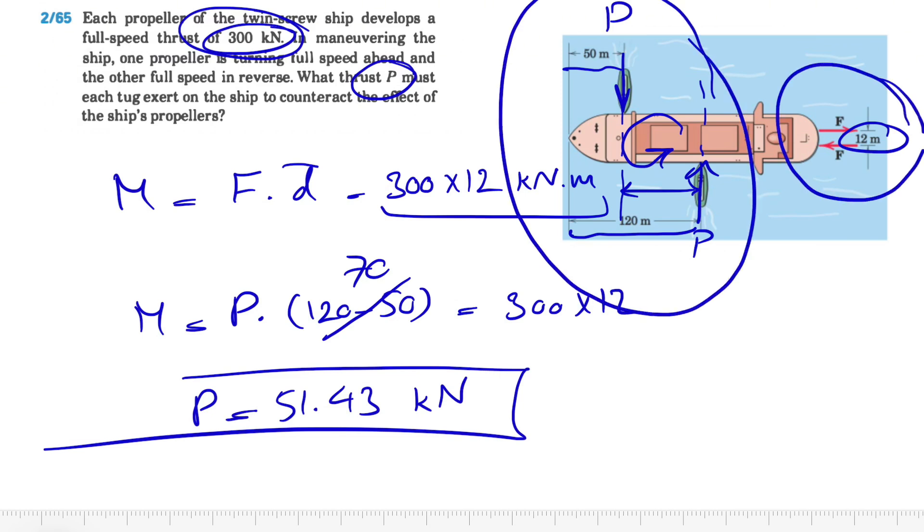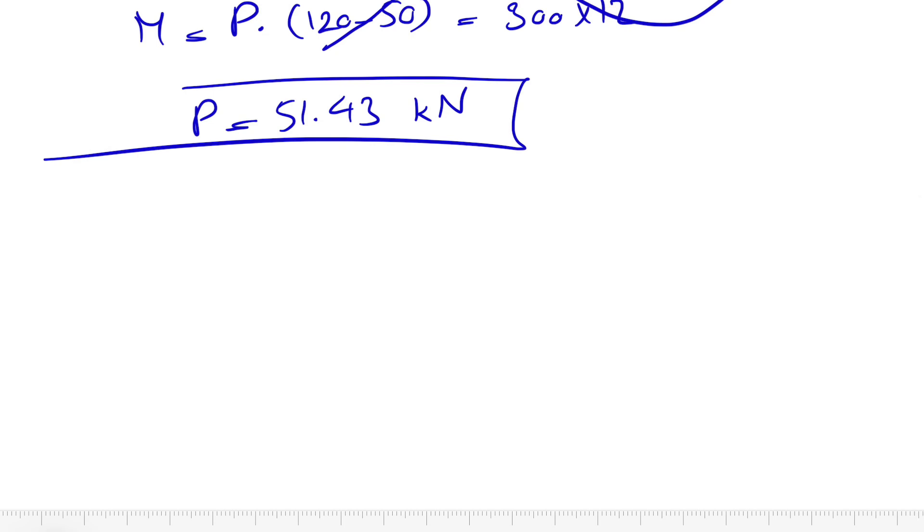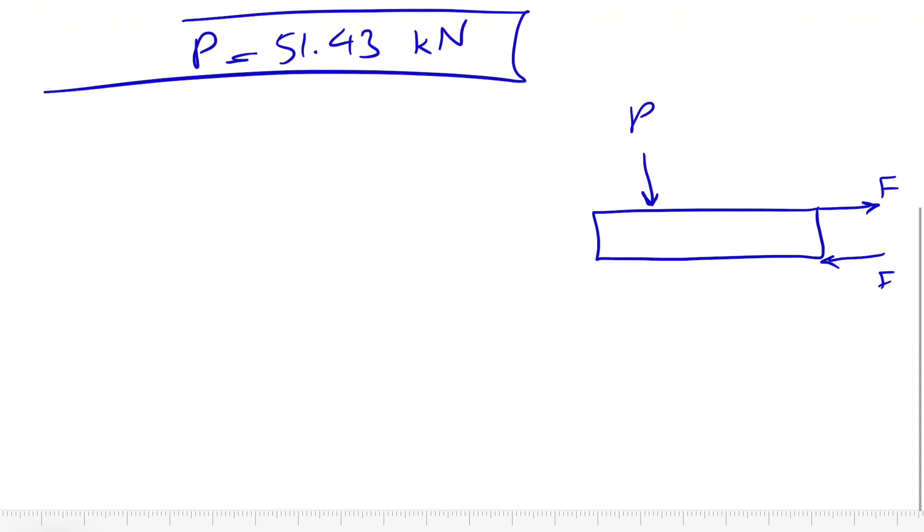Or we can do another way. So if we draw the free body diagram, let's say this is our ship and we have these two forces of F here, and we have these two forces that are applied by the tugs.